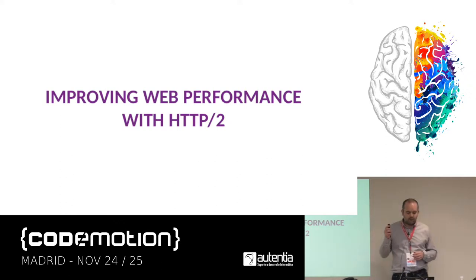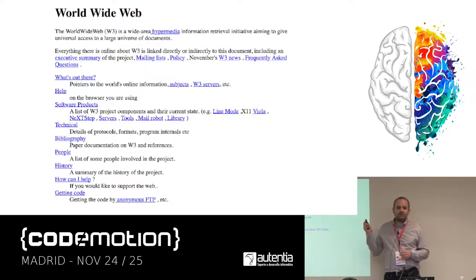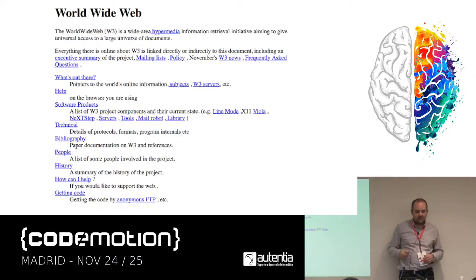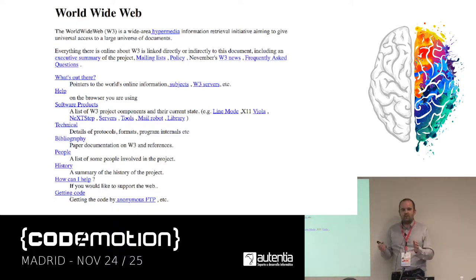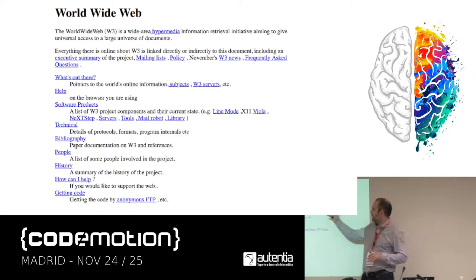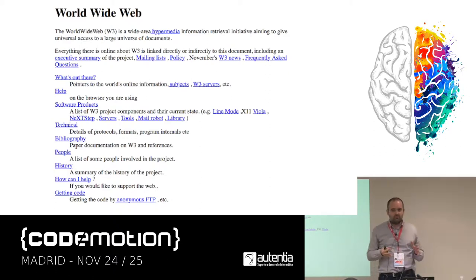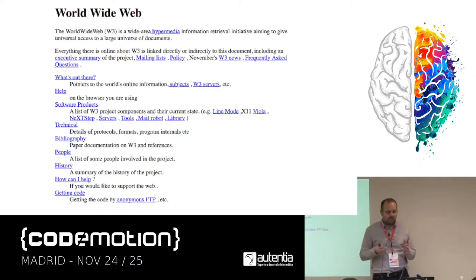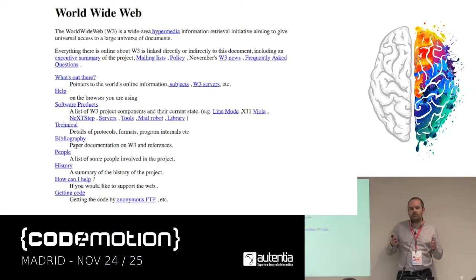How can we improve web performance with HTTP2? This is the first page ever, created at CERN about 25 years ago. What's cool about this page is it's just HTML — self-describing, all the text and information inside the same content. It's very small, about four kilobytes; if you compress it, you can take it down to one kilobyte, and on modern networks it could travel inside just one TCP segment.